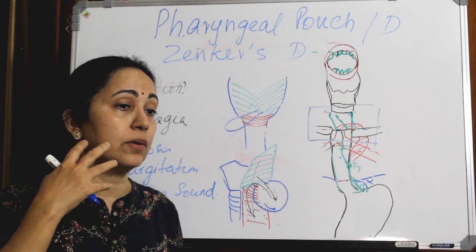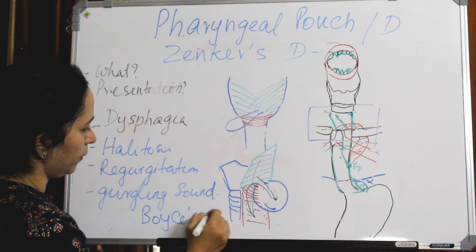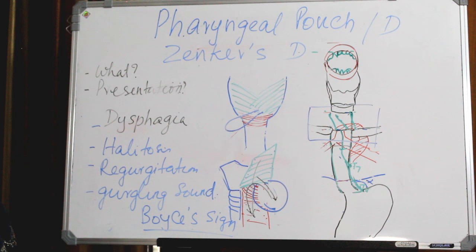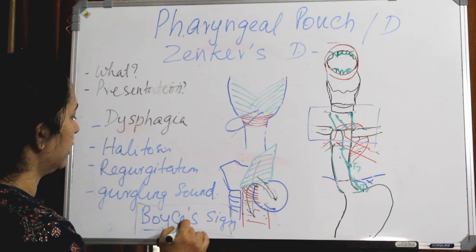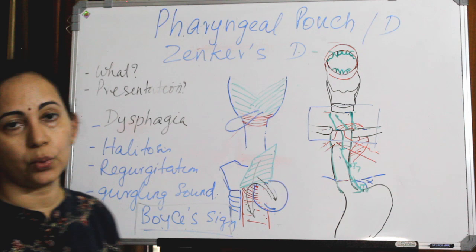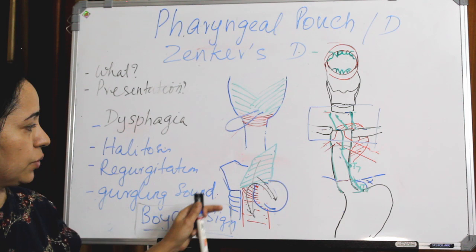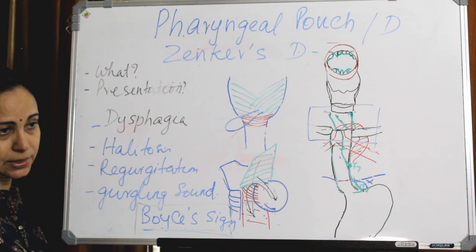As the pouch enlarges, it forms a swelling on the neck especially on the left side. On pressing that swelling, you can hear a gurgling sound, which is called Boyce's sign. So Boyce's sign is seen in pharyngeal pouch. There will be dysphagia, halitosis, and regurgitation of food especially on lying down. Later, as it progresses, there can be aspiration, cough, hoarseness of voice, laryngitis, and even lung abscess as a complication.